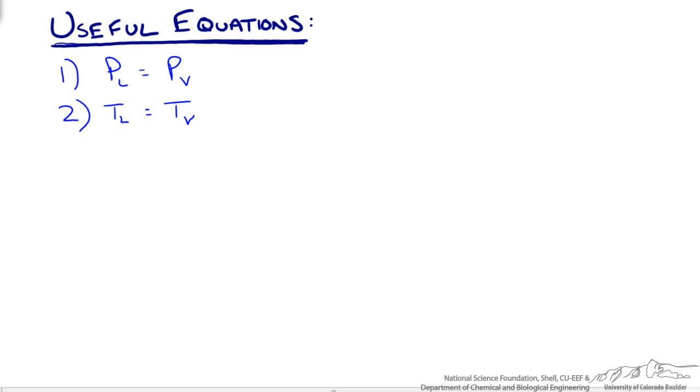Now the other thing that is true at phase equilibrium is that the phase equilibrium ratio, also known as the k value for VLE systems, k for component i is equal to the mole fraction of i in the vapor phase over the mole fraction of i in the liquid phase.